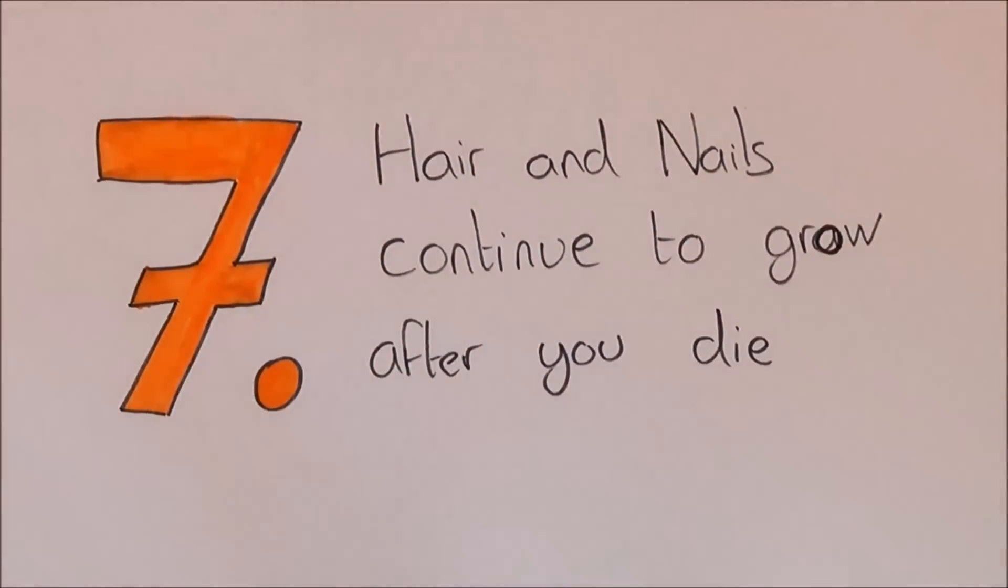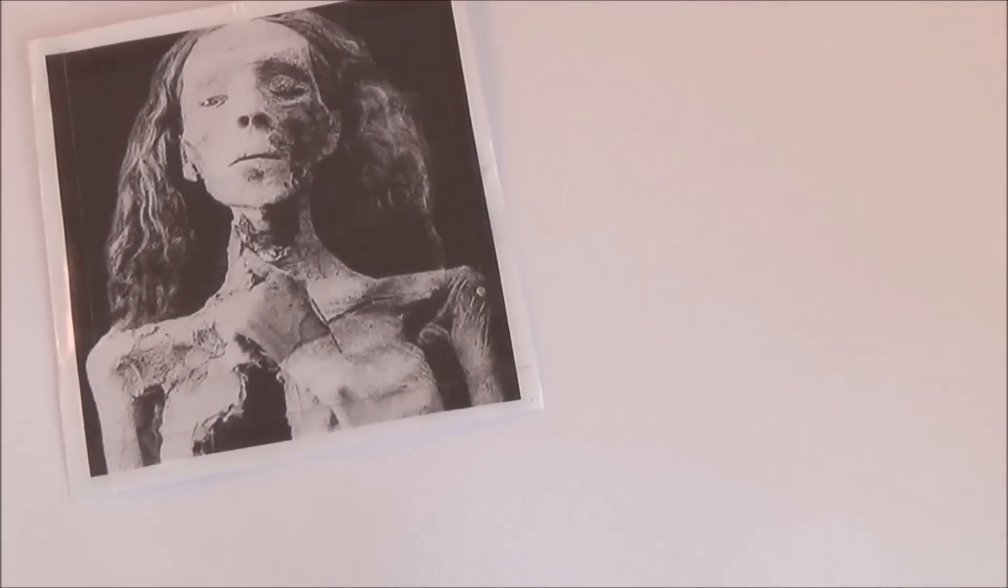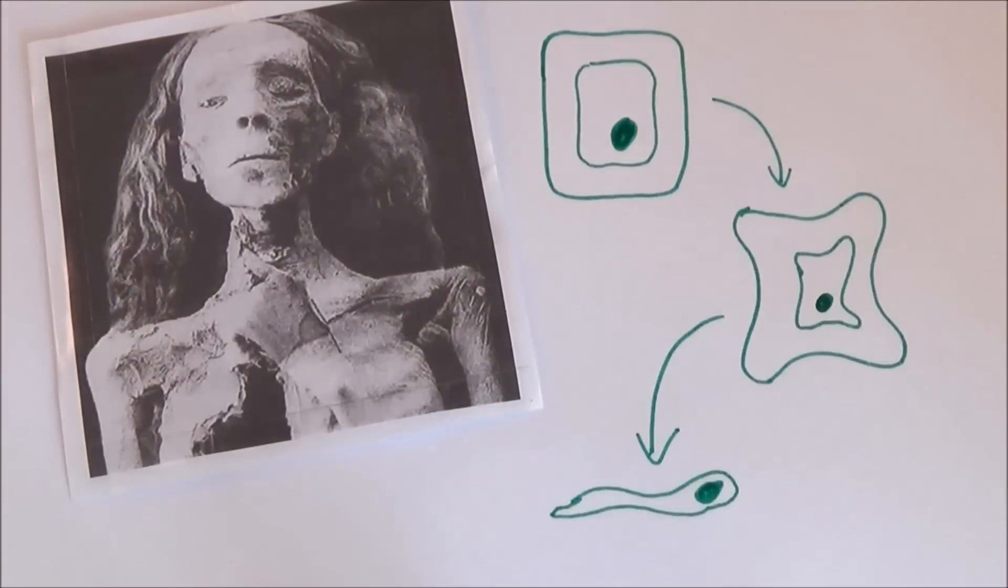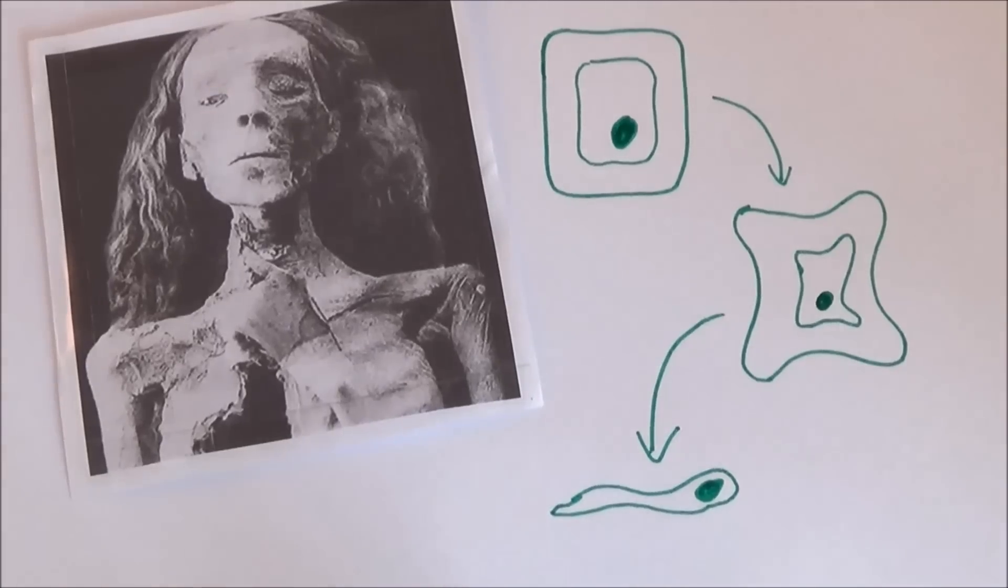Number 7. Hairs and nails will continue to grow after you die. From the moment that you die, your cells begin to rot away. Hairs and nails are included. The reason that they look longer, however, is that your cells become dehydrated, so they shrink. So all your skin around your head, fingers and toes shrink until your head, fingers and toes get effectively smaller. This can give the appearance that your hair and nails have gotten longer, but they really haven't.